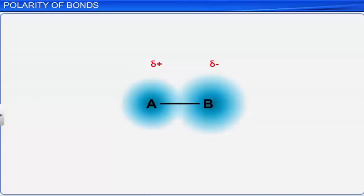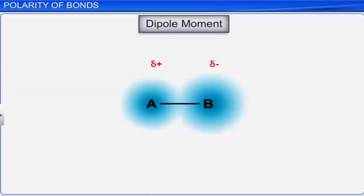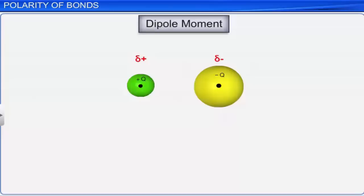The polarity in a polar covalent molecule is expressed in terms of dipole moment. Dipole moment is defined as the product of the magnitude of the charge and the distance between the centers of the positive and the negative charge.